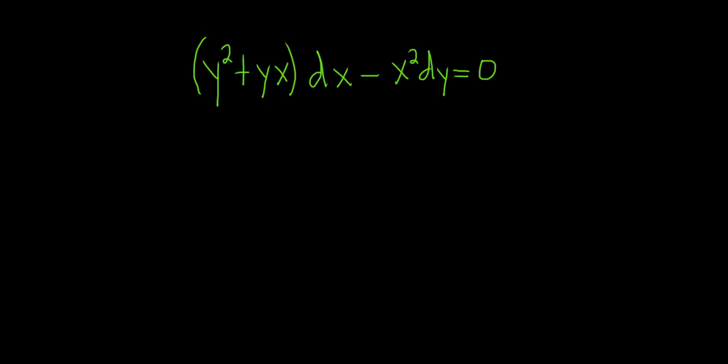In this problem we're going to solve this differential equation. So this differential equation is homogeneous, and you can tell because the exponents match. For example, this here is 2, and here 1 plus 1 is also 2. So this piece here is called a homogeneous function of degree 2, because all of the exponents are the same.